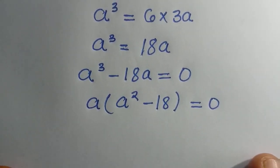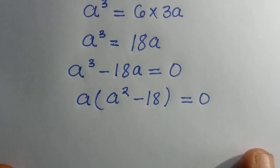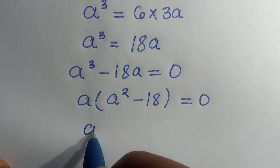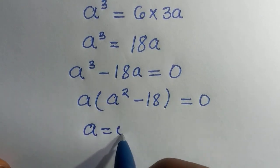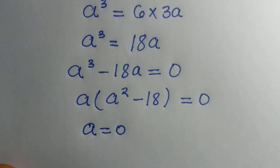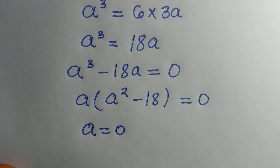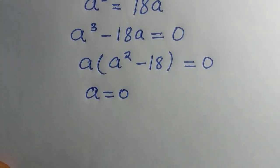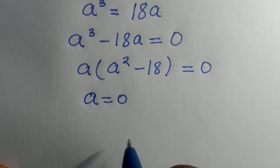So by rule of quadratic, it means we are going to let a equals 0, or for the second part, we consider our a squared minus 18 equals 0.